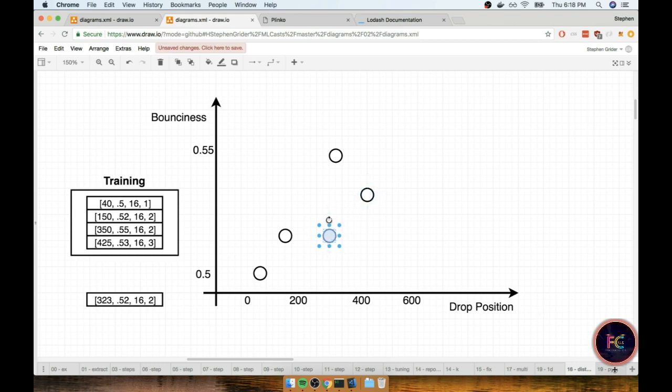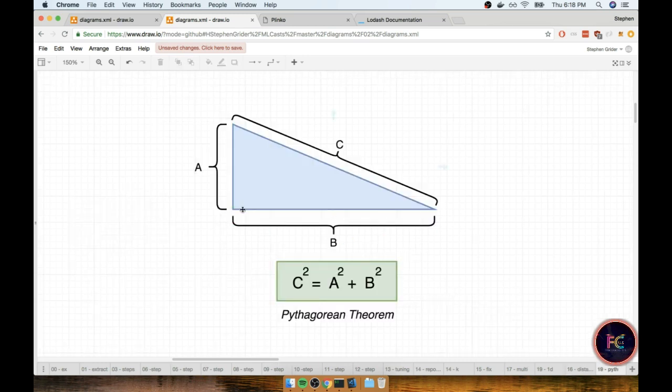And to calculate that, we would take the difference in one direction or the x-axis, the difference in the y-axis, we would square them, add them together, and then take the square root of all that. And that would give us the distance between those two different points.